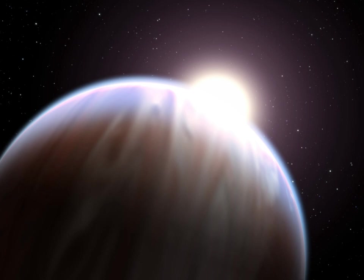One of the best known hot Jupiters is 51 Pegasi b. Discovered in 1995, it was the first extrasolar planet found orbiting a Sun-like star. 51 Pegasi b has an orbital period of about four days.